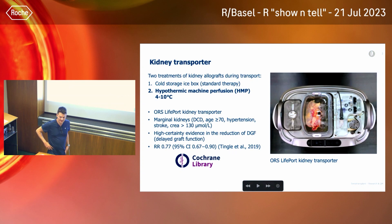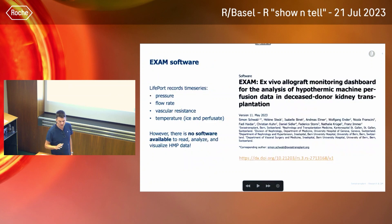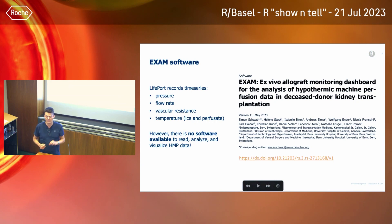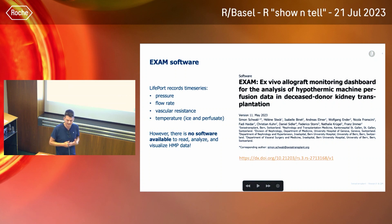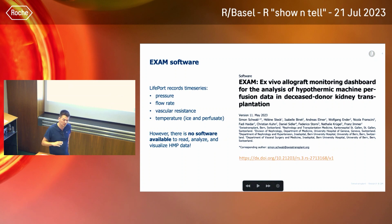This is evidence-based, and that's why we do it. As I said, this machine records data — it's time series data. With deceased donor kidney transplantation, the kidney often needs to go from one hospital to another. The machine records pressure, flow rate, vascular resistance, and temperature. However, there was no software available to read, analyze, or visualize that data. That's why I created this R package. There is also a pre-print available online, currently under review.